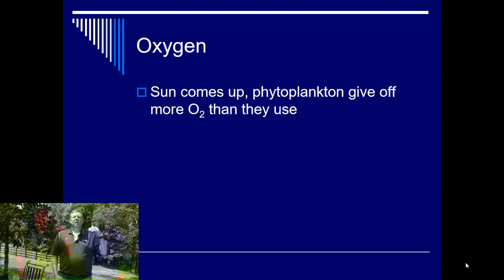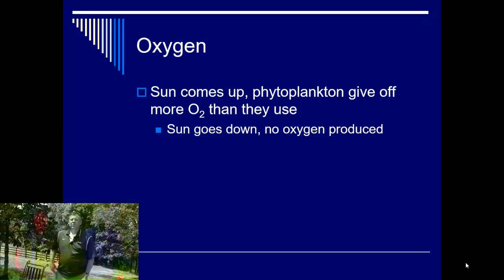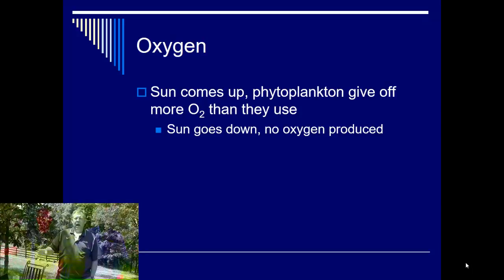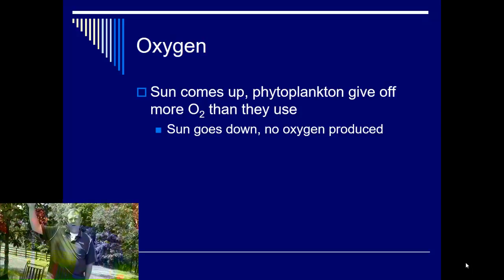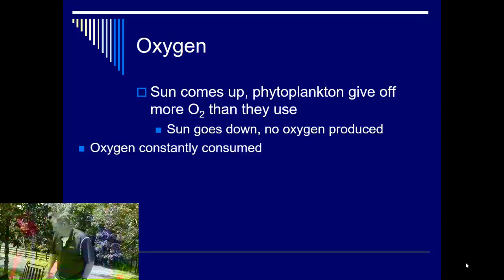There's a net increase in oxygen when the sun comes up. But when the sun goes down, phytoplankton stop photosynthesizing and stop producing oxygen. Yet everything is still consuming oxygen. What you're hoping for is that during the day an excess of oxygen is produced that will carry you through the night, and then when the sun comes up you start producing oxygen again. But that's not guaranteed — if you don't produce enough oxygen during the day, you can go anoxic, and that's when you get fish kills and problems with your lake.